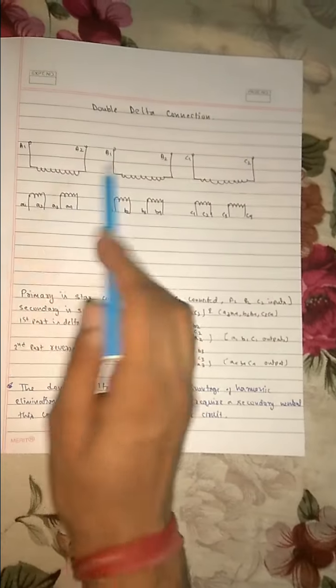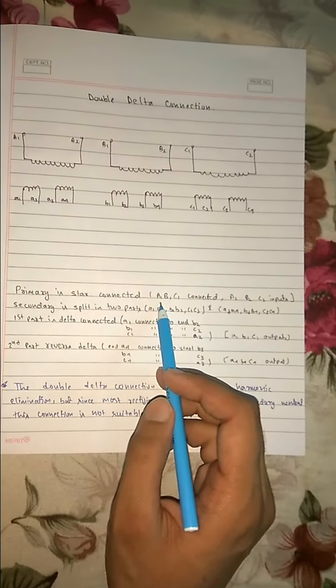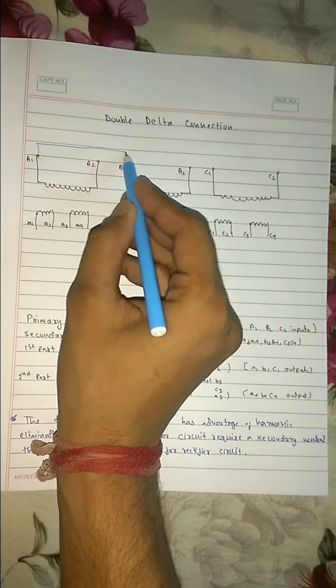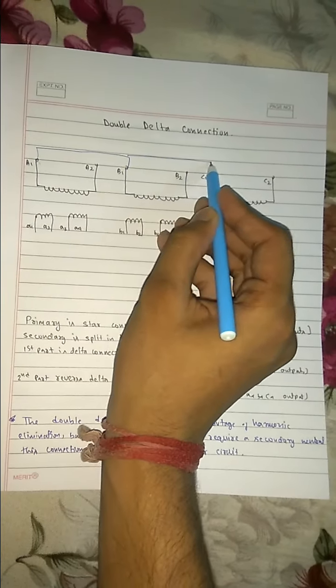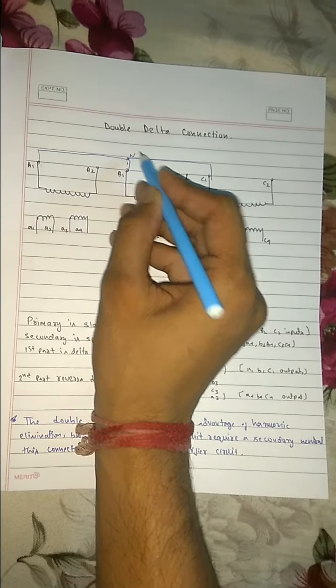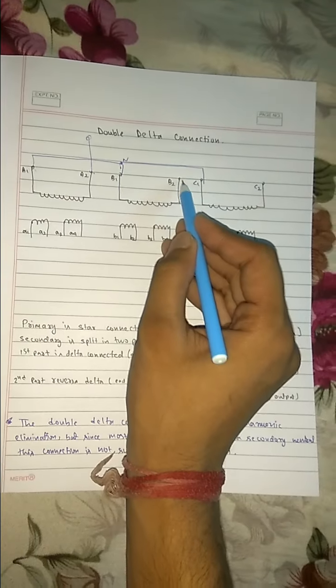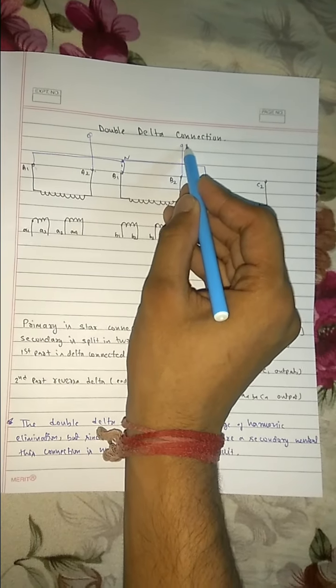The primary is star connected, so we are connecting A1, B1, C1 together. A1, B1 and C1 together, so this is our neutral point. And A2 is our input. We are taking B2 as input.